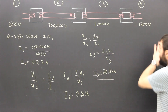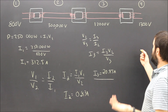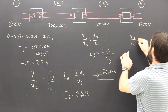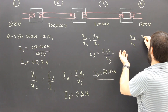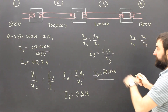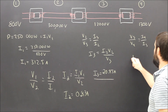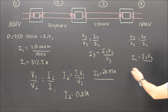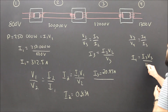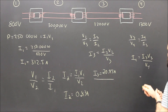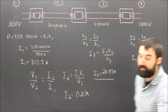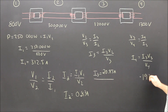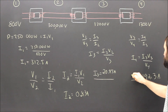How much current is available in our actual neighborhood to use? One more time — we'll use the transformer for three and four. So this time V3 over V4 equals I4 over I3. Rearranging, I4 equals I3 times V3, which is again just 250,000 watts divided by V4, and that turns out to be 192.3 amps.